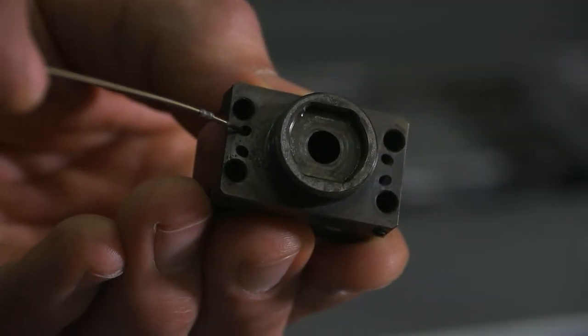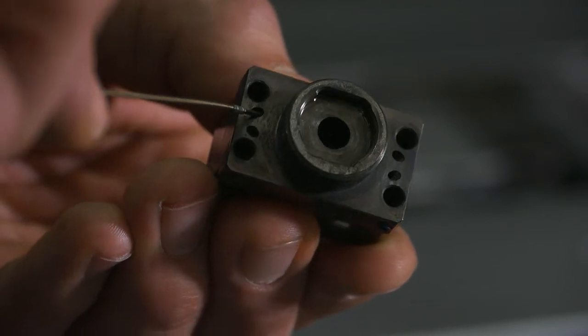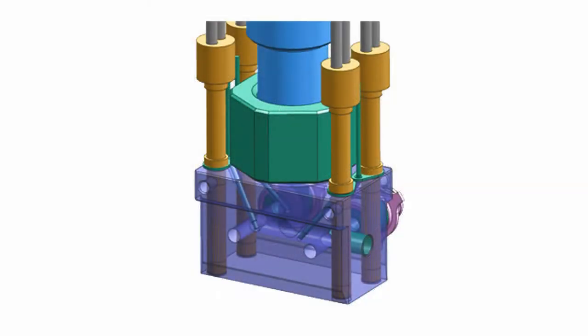First, we will install one TC until the locating crimp bottoms out in the TC counter bore. Keep in mind that the TC installation is at a compound angle, so you will need to angle the TC accordingly during installation.